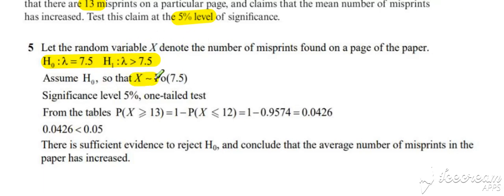So X follows a Poisson distribution with a lambda value of 7.5. Our bit of evidence that we've collected was 13, so we work out the probability of the evidence or worse. Note that the inequality sign used here always takes the same direction as the alternative hypothesis. We can pick that off from our calculator, so we get our probability value, compare with the significance level as usual, and conclude in the context of the question.